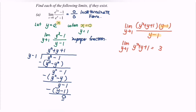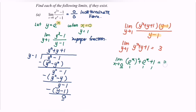Alternatively, we can substitute back in terms of x. Since y equals e to the power of x, the expression becomes (e to the power of x) squared plus e to the power of x plus 1. Substituting x equals 0 gives 1 plus 1 plus 1, which also equals 3. So the answer is confirmed, and thanks for watching.